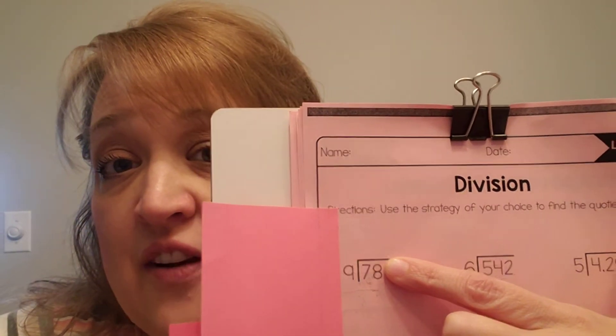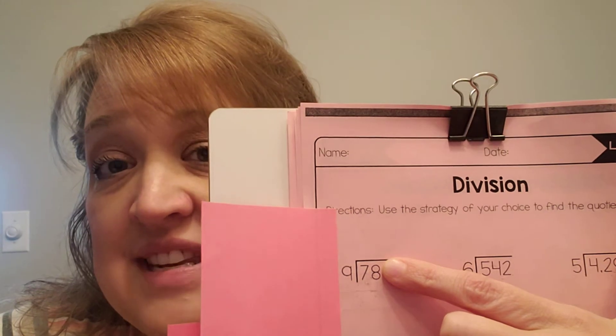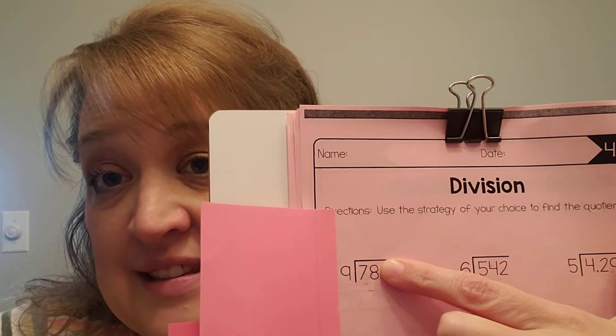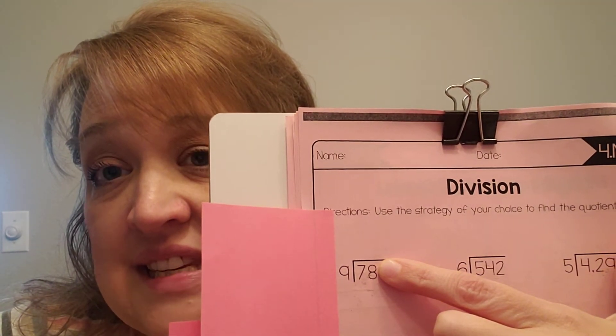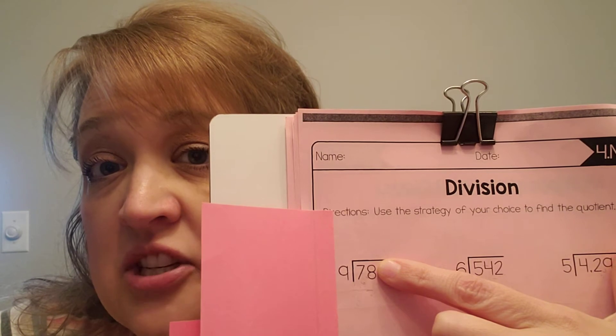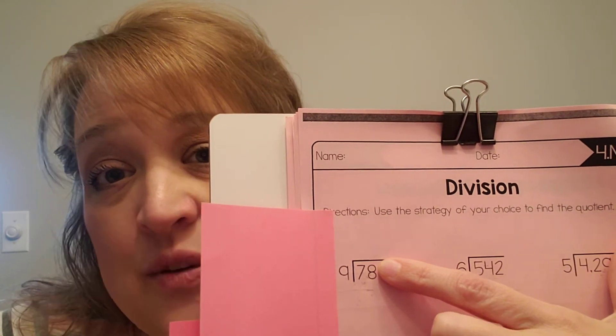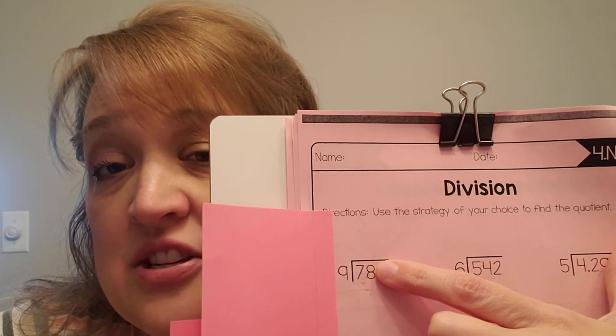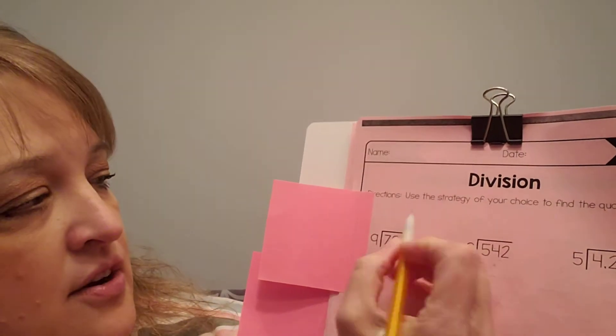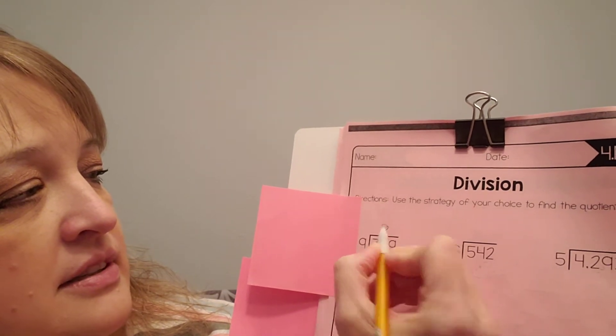So now you have to figure out how many 9s there are in 78. So I'm going to think about my 9s multiplication. I know that 9 times 6 is 54. I know that 9 times 7 is 63. I know that 9 times 8 is 72. 9 times 9 is 81. That's above. So I'm going to have to go with the 72, which is 9 times 8. So right above this 8, because we use the 78, right above here, I'm going to put 8.